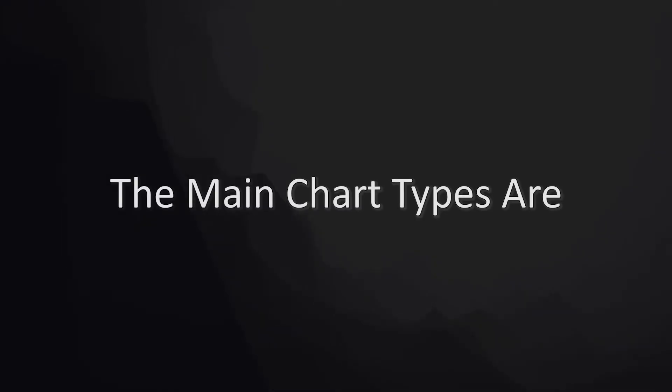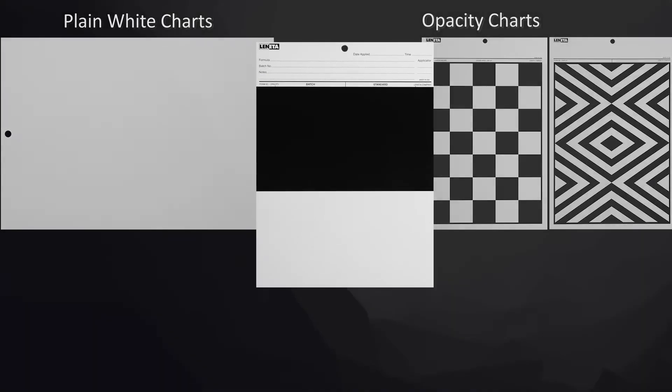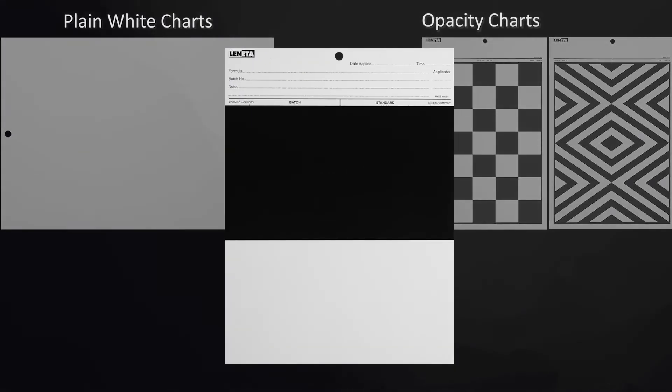The main chart types are plain white charts used for color evaluations and presentations, opacity charts used for hiding power demonstrations and contrast ratio measurements, solid black and white patterns used for instrumental and visual hiding power evaluations.